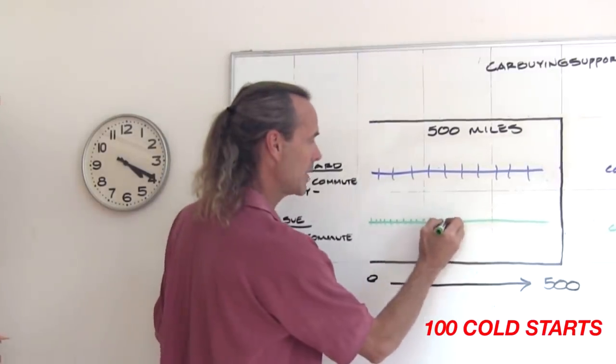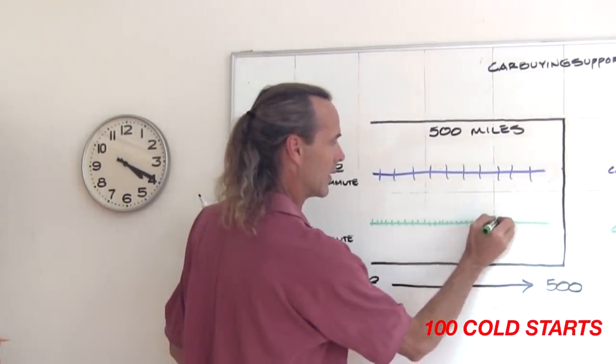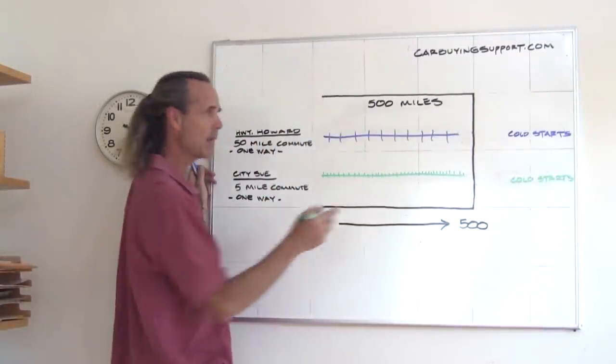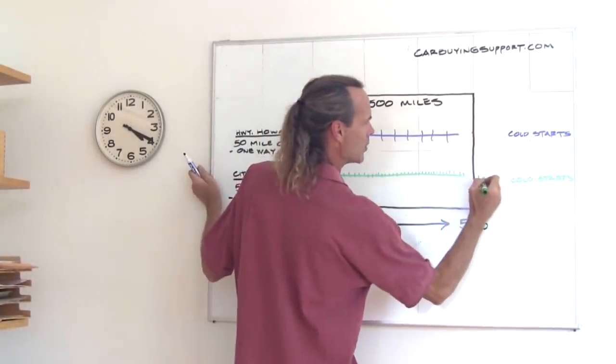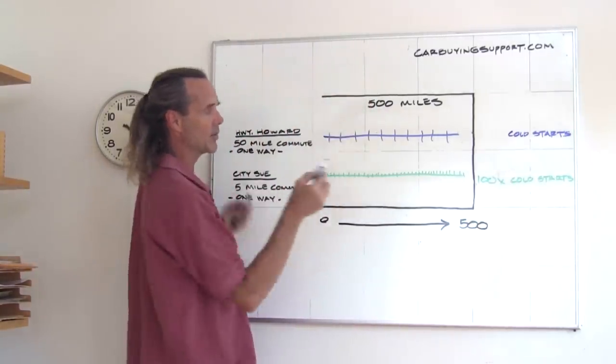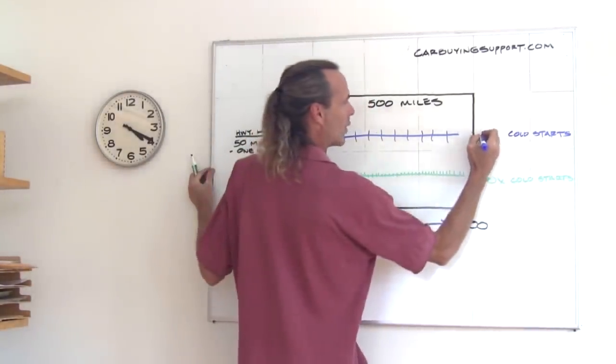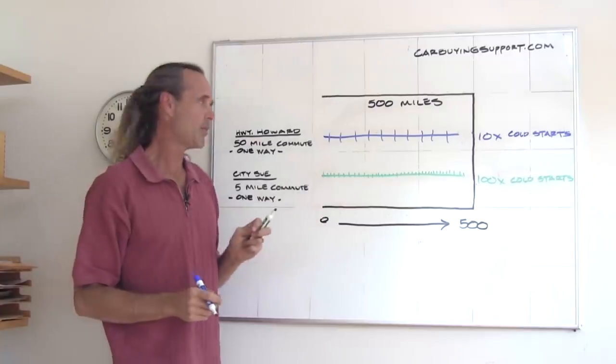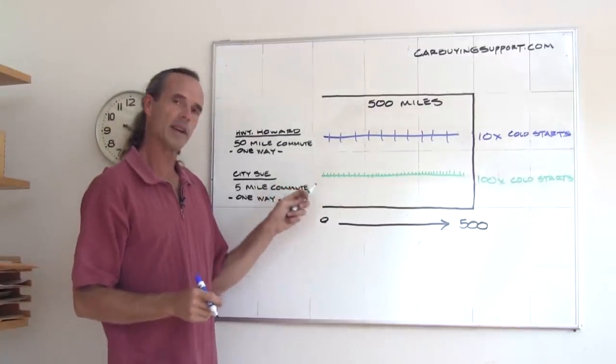A hundred times she has to do this, right? So, a lot more. In fact, 10 times more. She's got a hundred cold starts for that 500 miles, whereas Highway Howard only has 10 times. That alone is an extreme example of wear and tear.